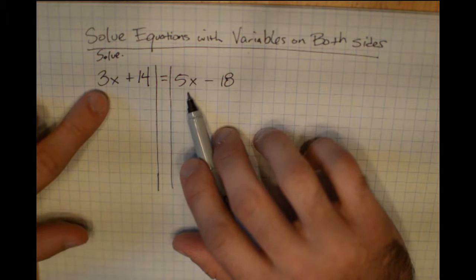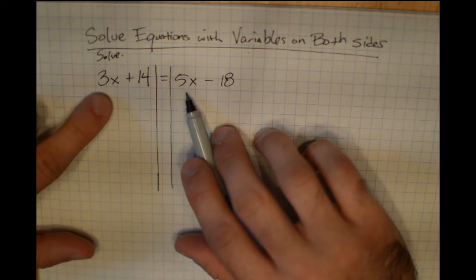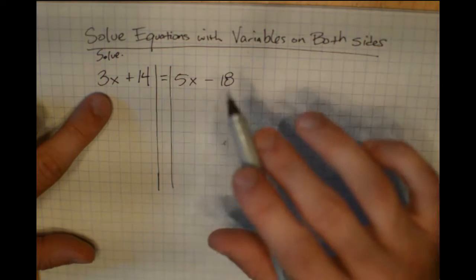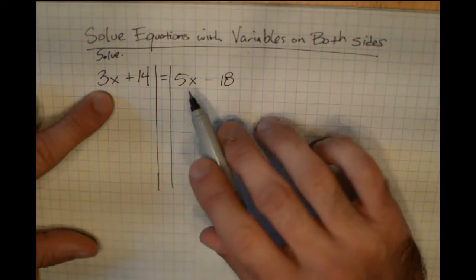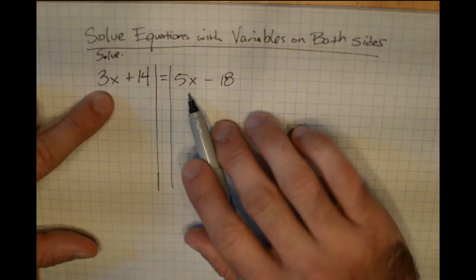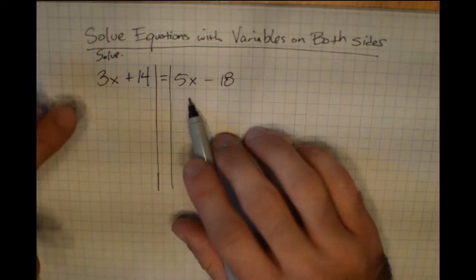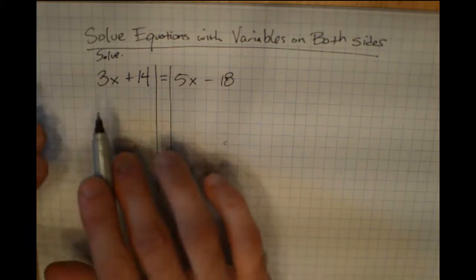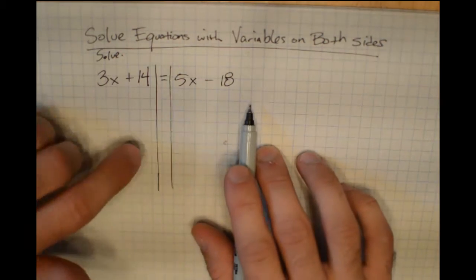The first thing to know is that when these two terms, 3x and 5x, are on opposite sides, they cannot be combined together. I can't take this 3x and this 5x and combine them to be 8x because they're on opposite sides. I can only combine things that are both on the left or both on the right.